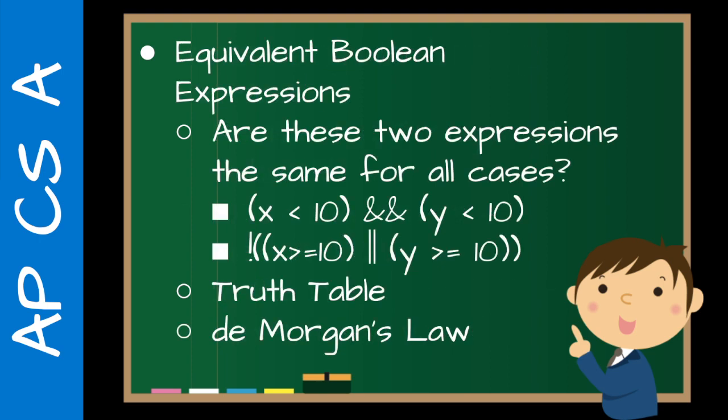And then the last topic I think in this unit is equivalent Boolean expressions. So the question is, are these two expressions the same for all cases? So we have two variables, X and Y. So one approach is to do what's called a truth table. And that is where you just basically make a chart. So you have two variables. So true true, true false, false true, false false. So you have four possibilities. And you just go down through and you calculate. Is this true? Is it false? And then compare both.